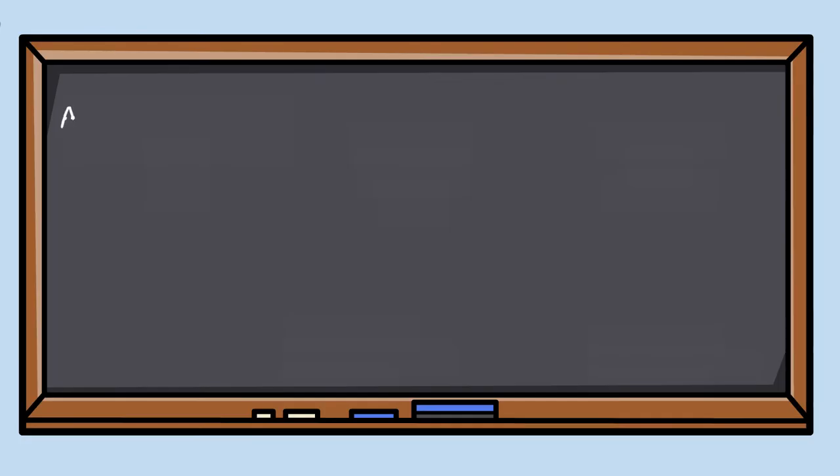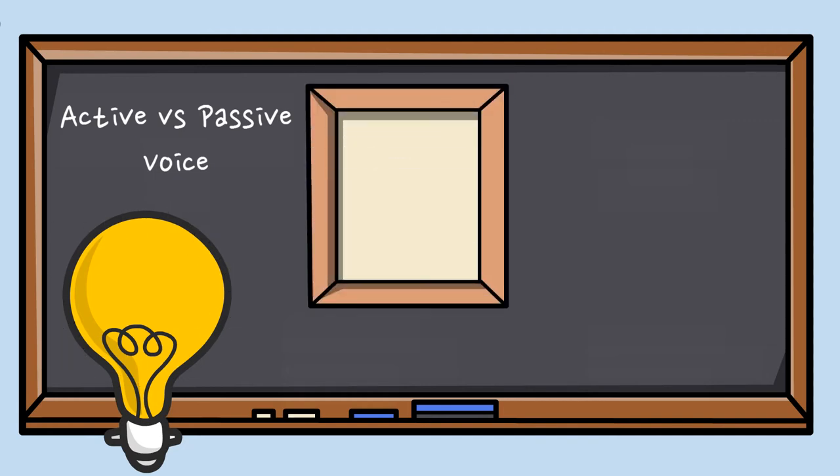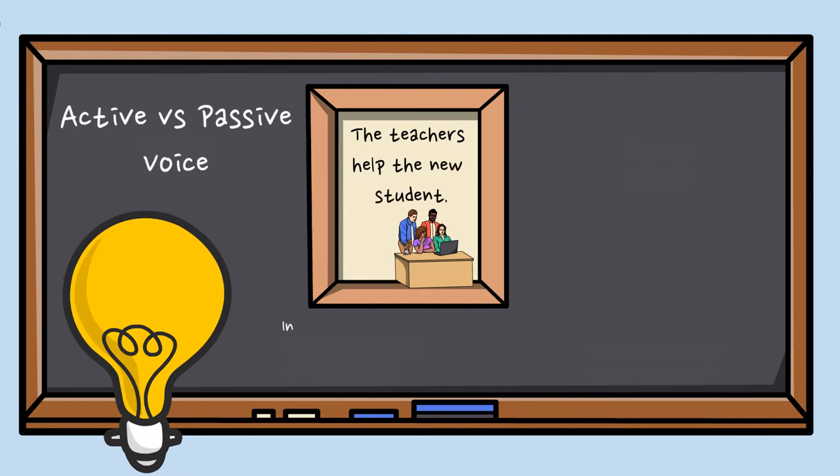Let's see the differences between active voice versus passive voice. I will give you an example. The first example is an active sentence. The teacher, that is the subject, help, verb, the new student, object. As you could see in this active voice sentence, the subject does the action.